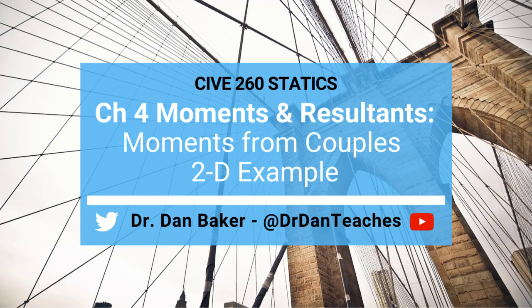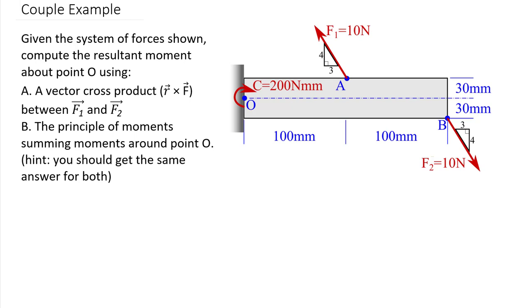Hello students of statics, this is Dr. Dan Baker. Welcome to this example video looking at how we can use our knowledge about couples and moments from force couples or concentrated couples, and how we can apply that to a two-dimensional problem where we're asked to find the resultant moment about point O. We're going to do this two different ways. The first approach is a vector cross product approach between the lines of action of F1 and F2, and additionally we'll look at the principle of moments summing moments around point O. Feel free to pause the video and copy this diagram, noting that F1 and F2 are proportional to a 3-4-5 right triangle, and we have a concentrated couple of 200 newton-millimeters applied at point O.